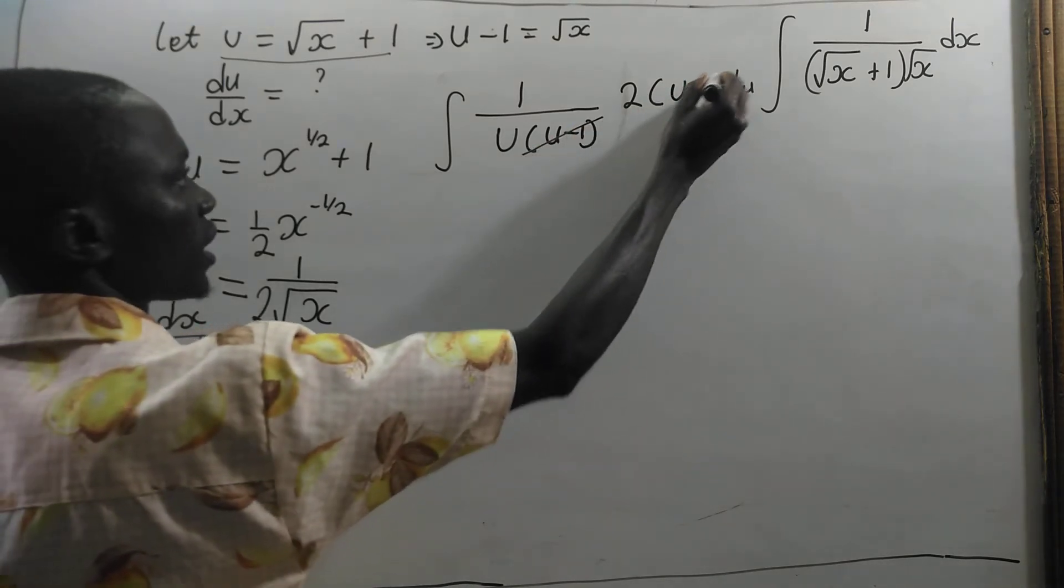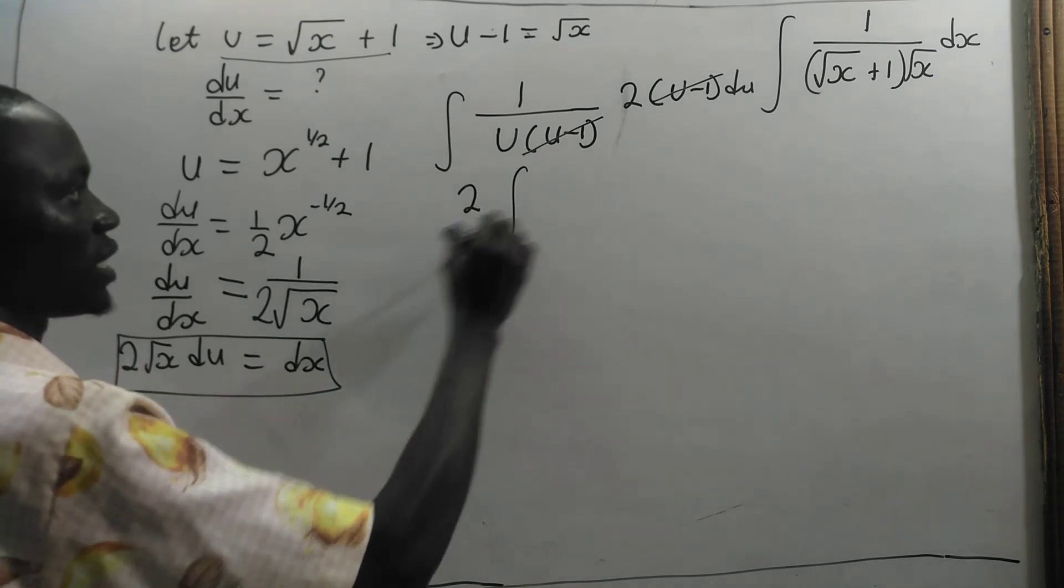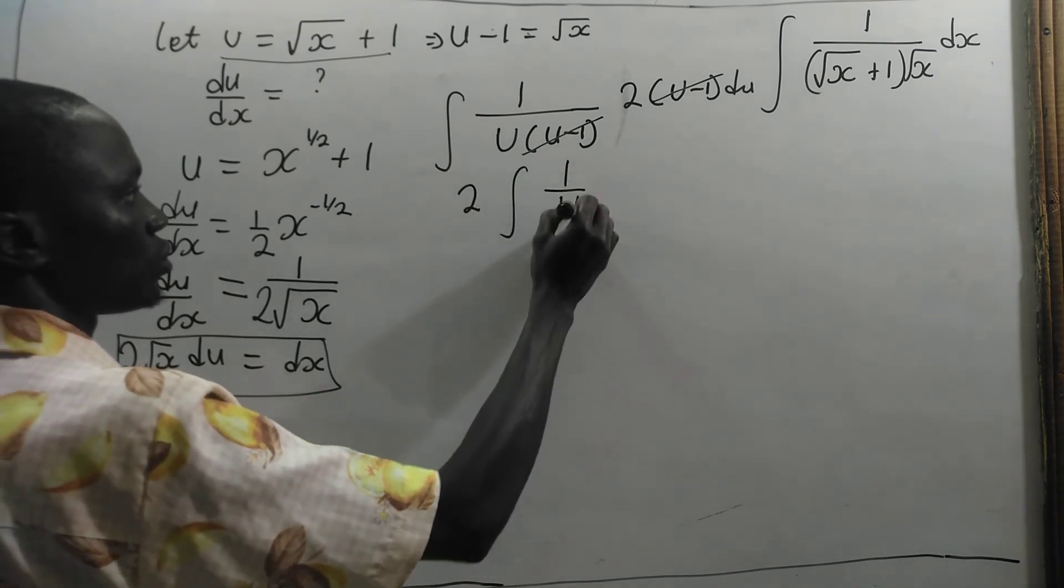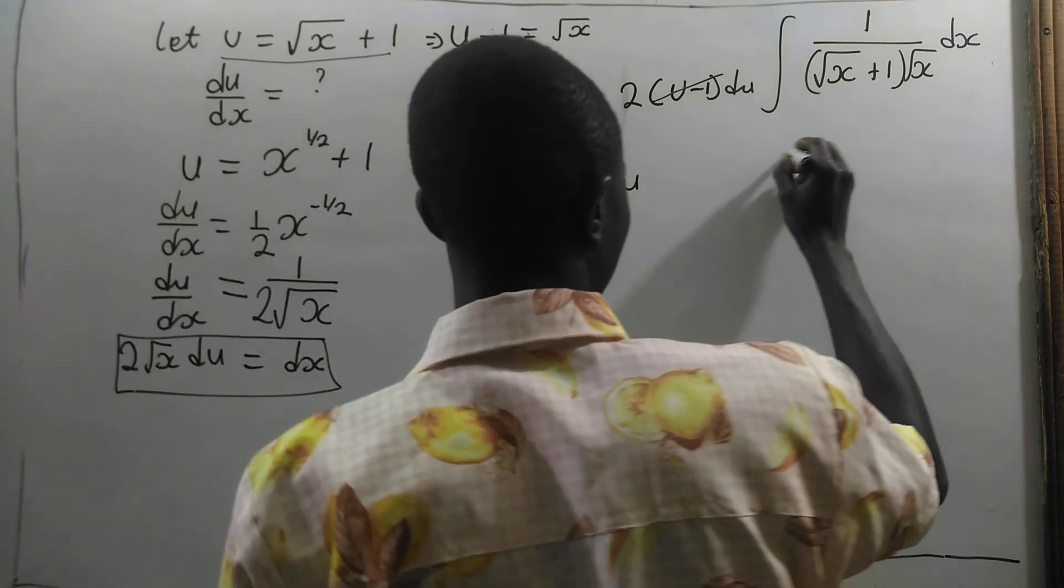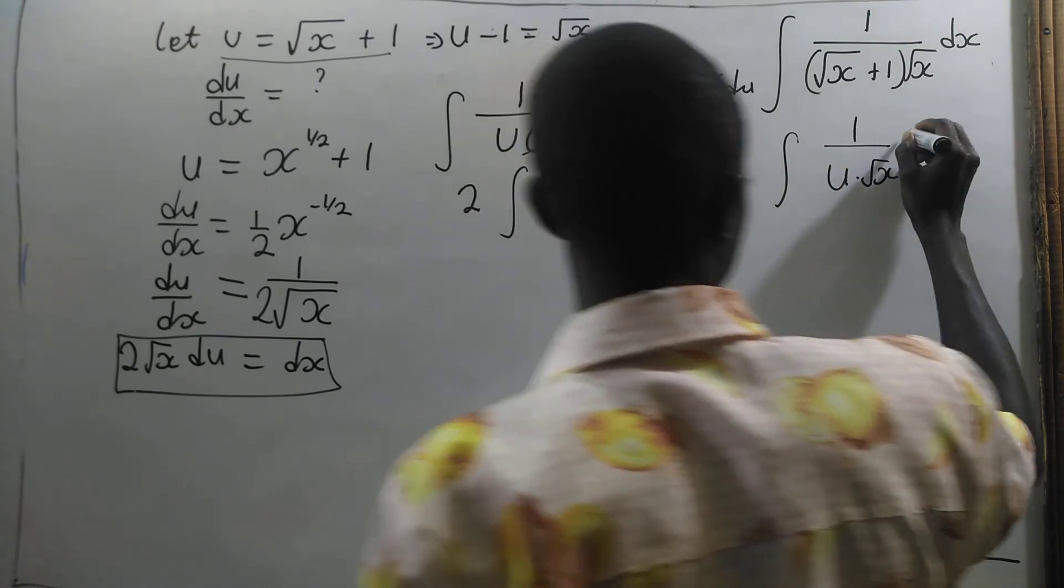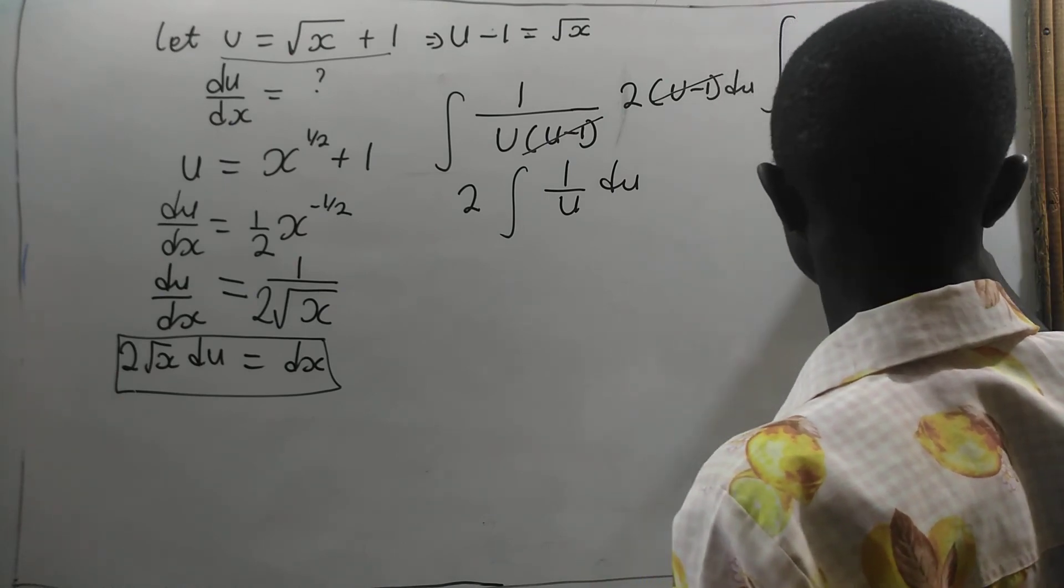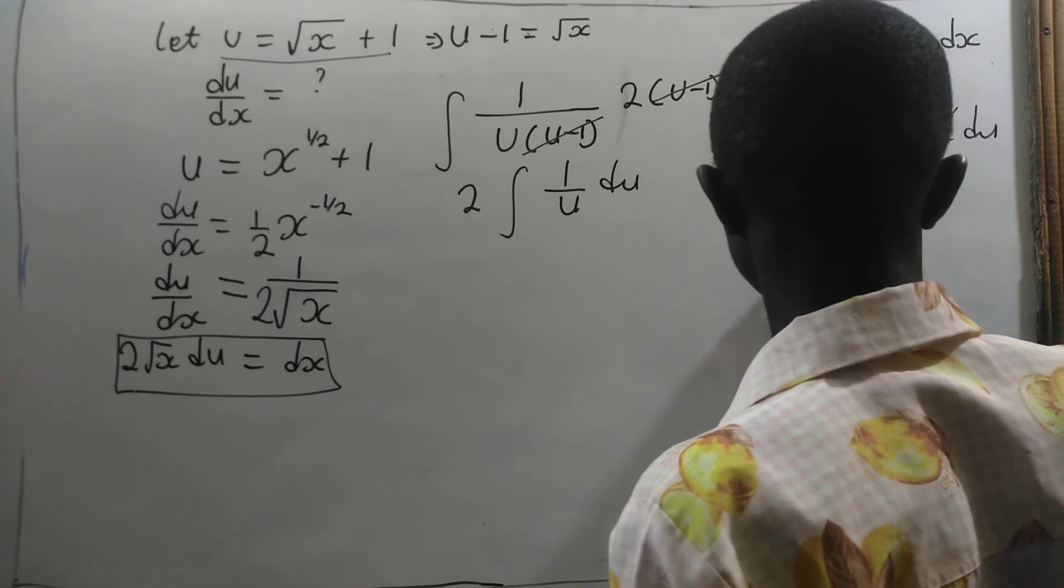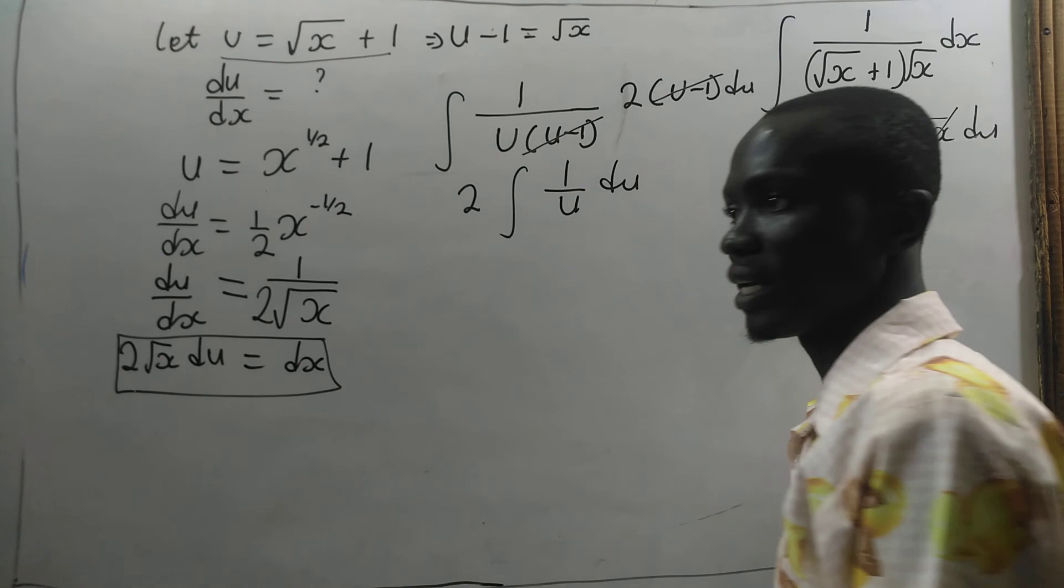And what do we see? This one will cancel this. And so we are going to have 2 times the integral 1 on u du. If you don't want to go this way, you can just substitute it directly and have the integral 1 on u times root x, then 2 root x du. And this one will cancel this. So we are going to have 2 times the integral 1 on u du. Any of the two approaches.